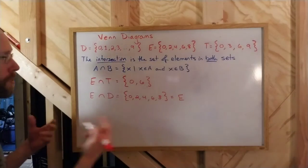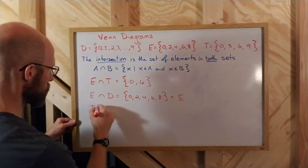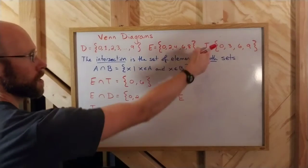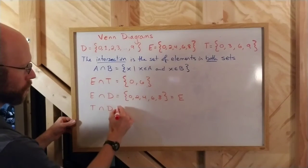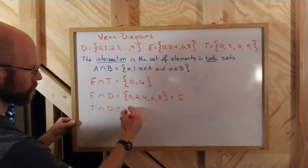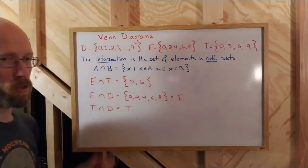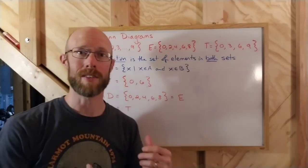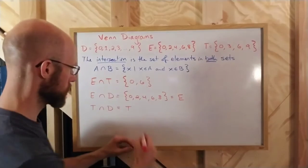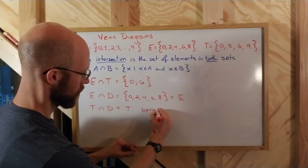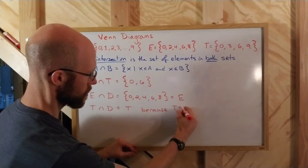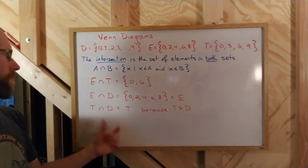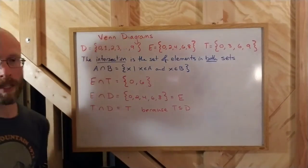And for that reason, if I were to intersect T with D, the triples with the digits, you're going to get out the smaller set, because T in this case is a subset of D. Because T is a subset of D, their intersection will be that subset.